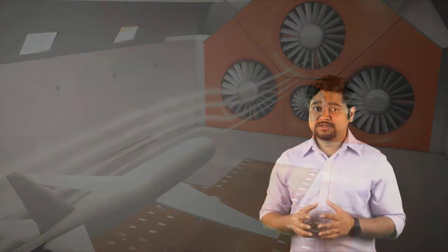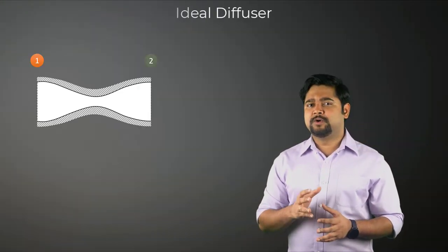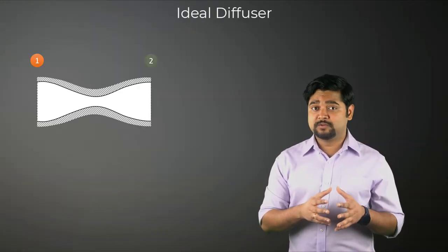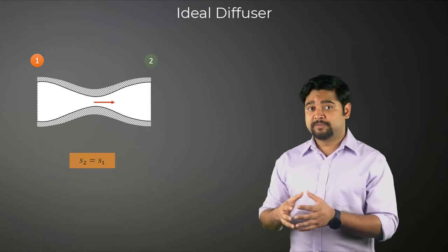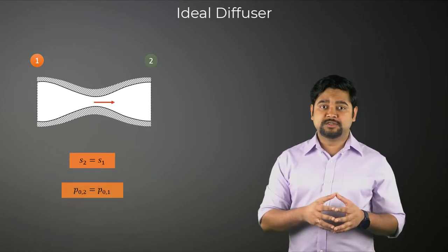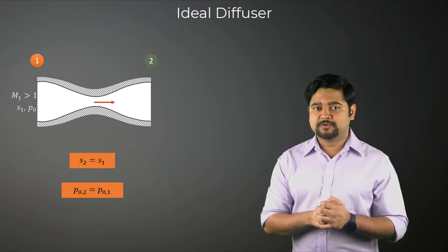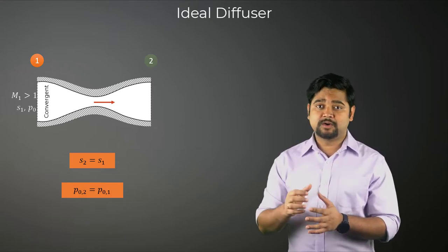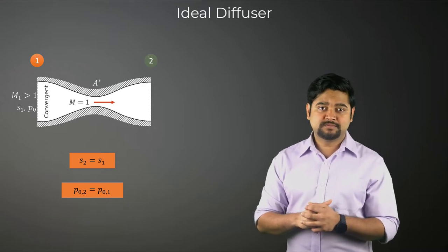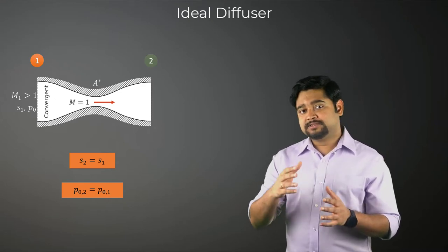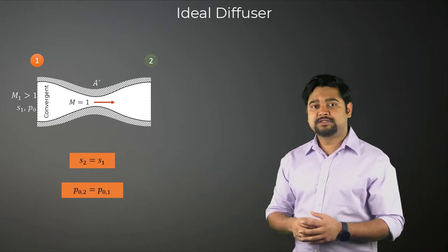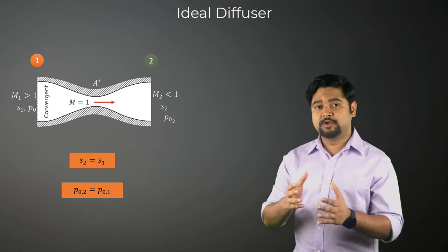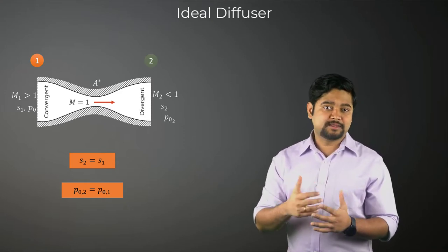If we consider an ideal diffuser, the one in which the incoming flow is slowed via an isentropic compression to lower velocities, the supersonic flow entering the diffuser is isentropically compressed in the convergent duct to Mach 1 at the throat, and is then further isentropically compressed in a divergent duct to a low subsonic Mach number at the exit.